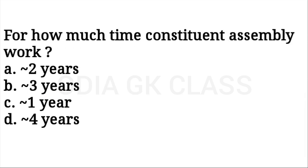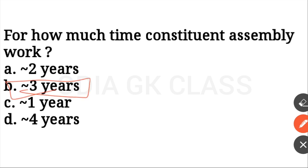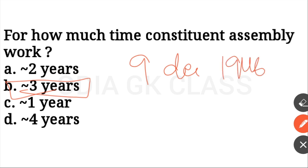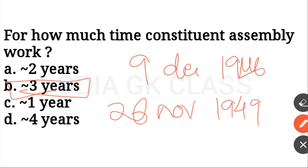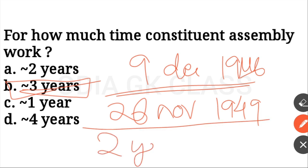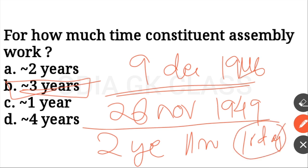For how much time did the Constituent Assembly work? The Constituent Assembly worked from 9 December 1946 to 26 November 1949 — approximately 2 years, 11 months, and 18 days in total.